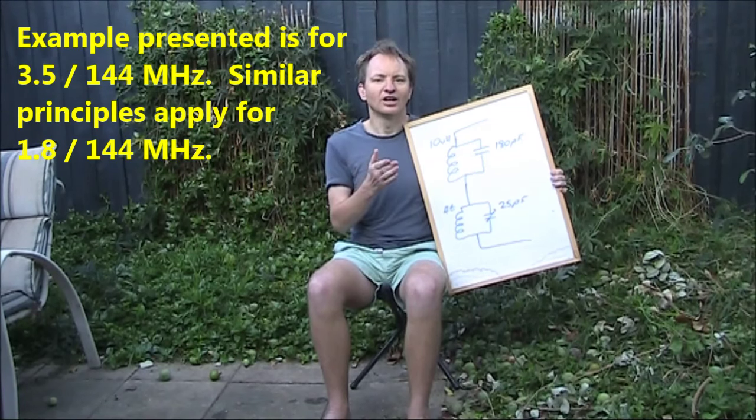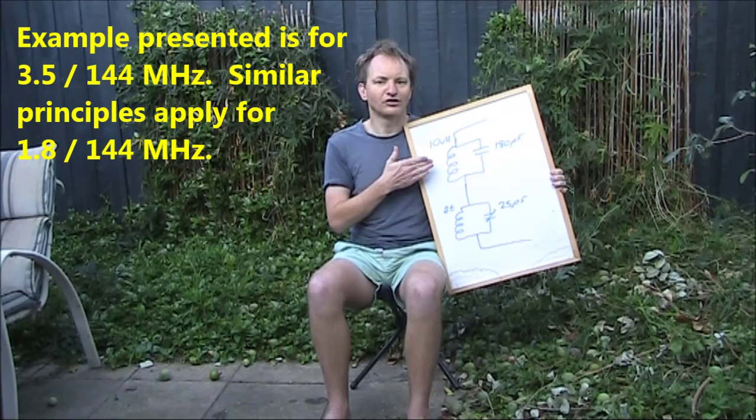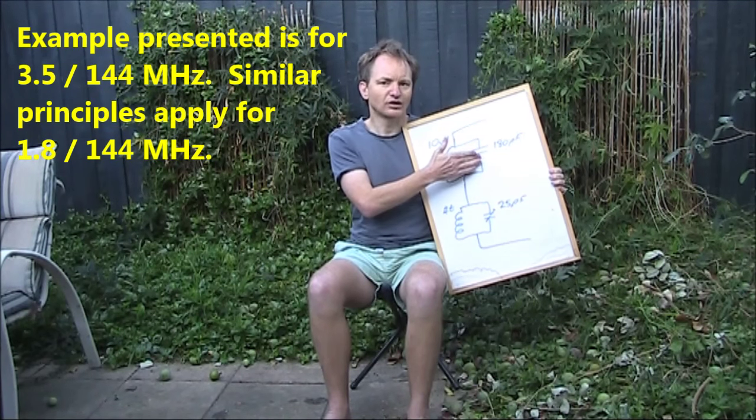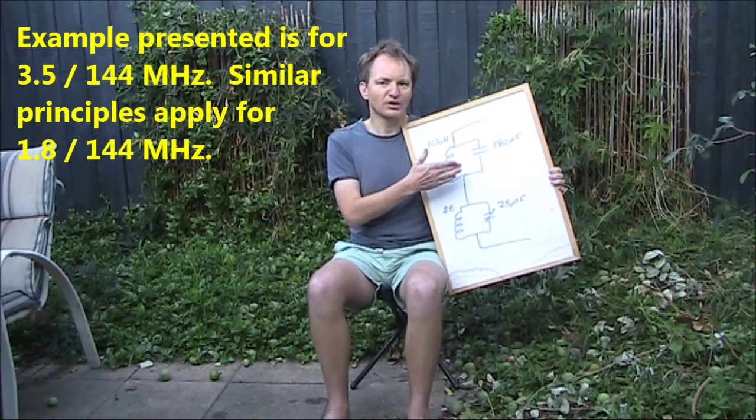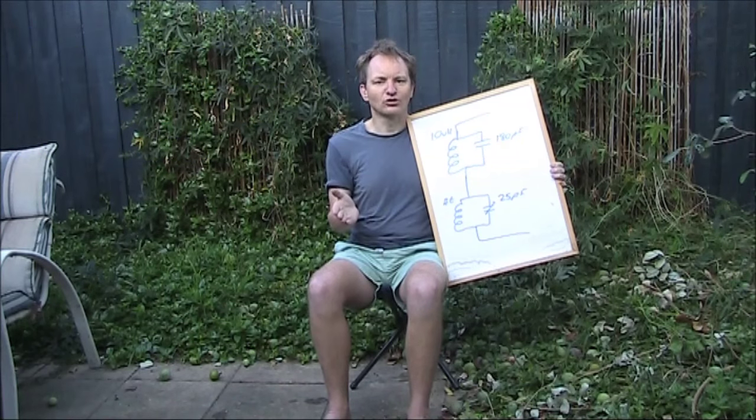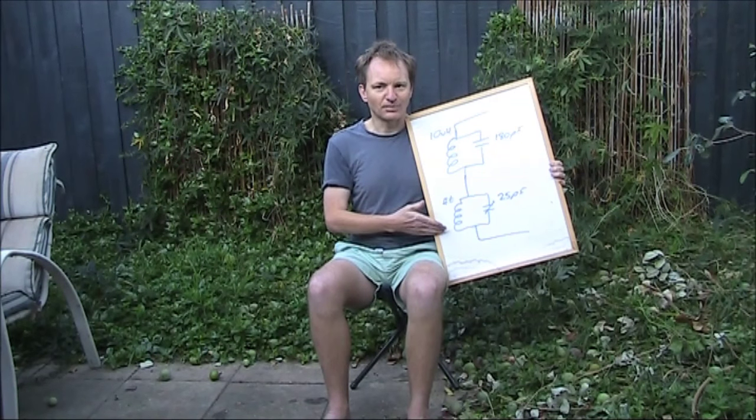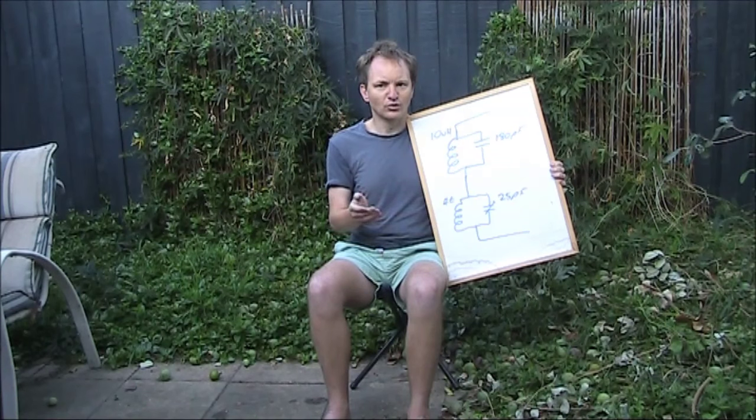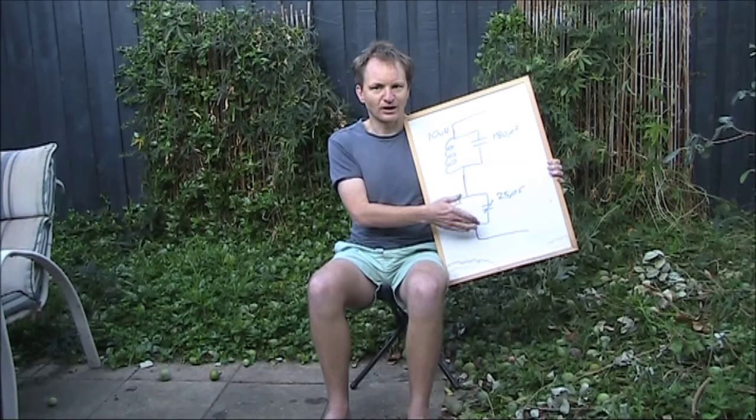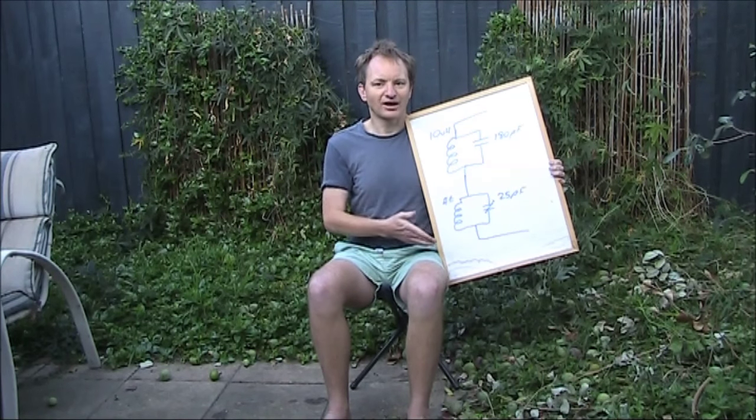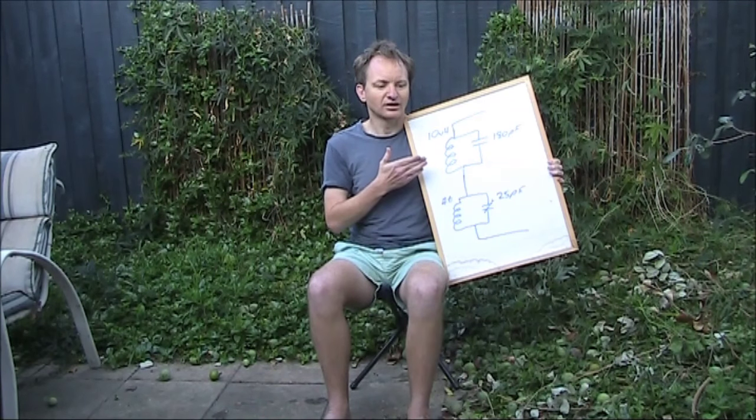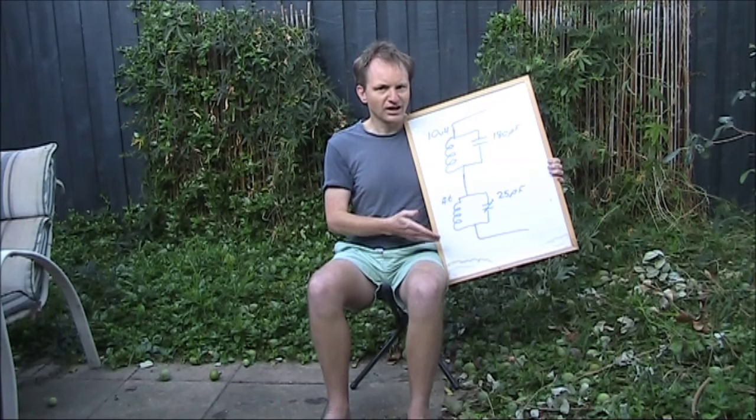Here's how I think they did it. The top tuned circuit is resonant in the 80 meter amateur band. 10 microhenries in parallel with 180 picofarad. That's resonant at around 3.6 or 3.7 megahertz. The bottom tuned circuit is resonant at VHF. There's about four turns of wire on about 4 millimeters, air wound, and then there's 25 picofarad, a trimmer capacitor, in parallel with that. You might wonder how this actually works. After all, wouldn't one tuned circuit interfere with the other?